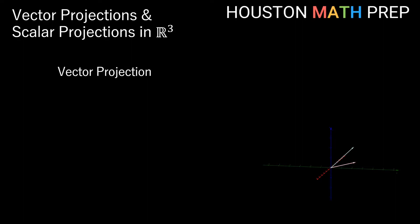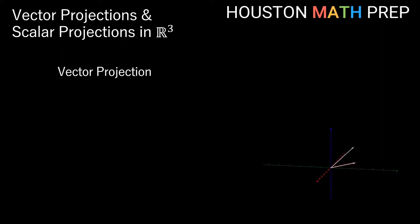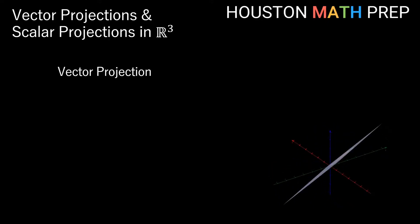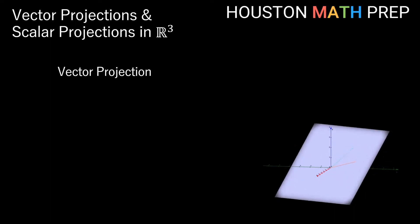Welcome back everyone, Houston Math Prep here. We've got two vectors in 3D space, and as long as these vectors aren't parallel we should be able to rotate the space so that we can look flatly along both of them. This tells us that two non-parallel vectors actually define a plane in R3. Because of this, we're going to illustrate in 2D space when explaining the ideas of vector projections and scalar projections.